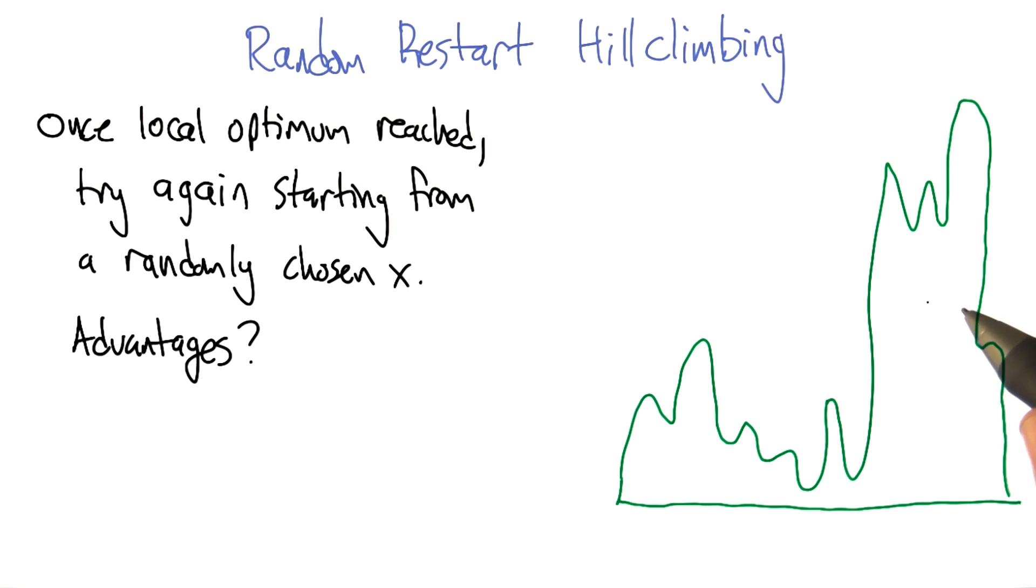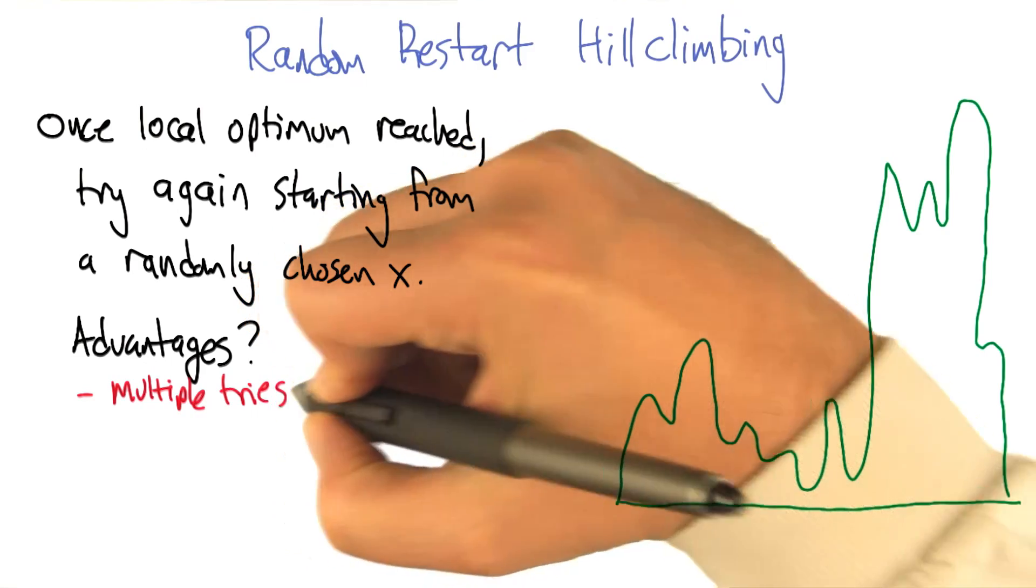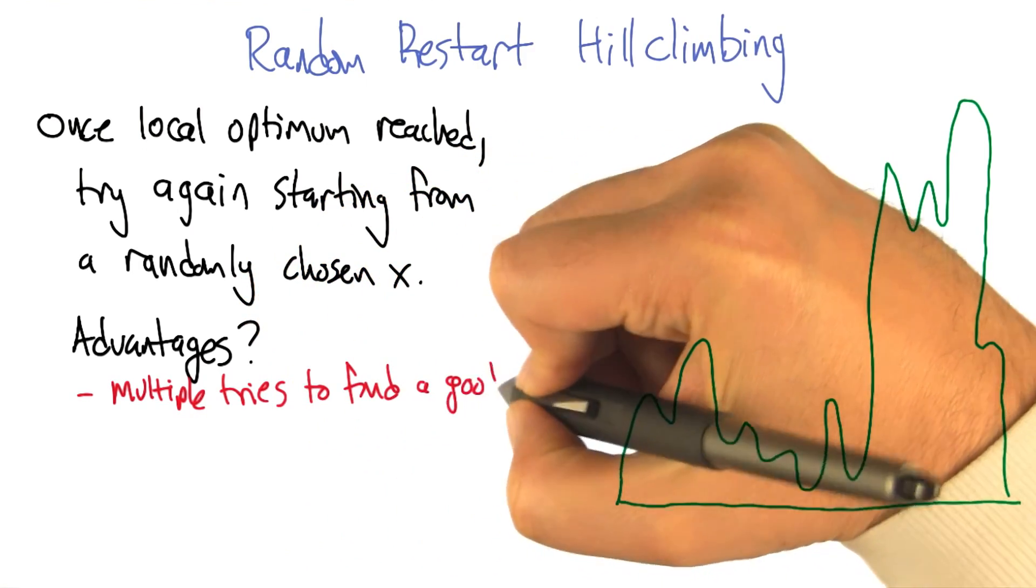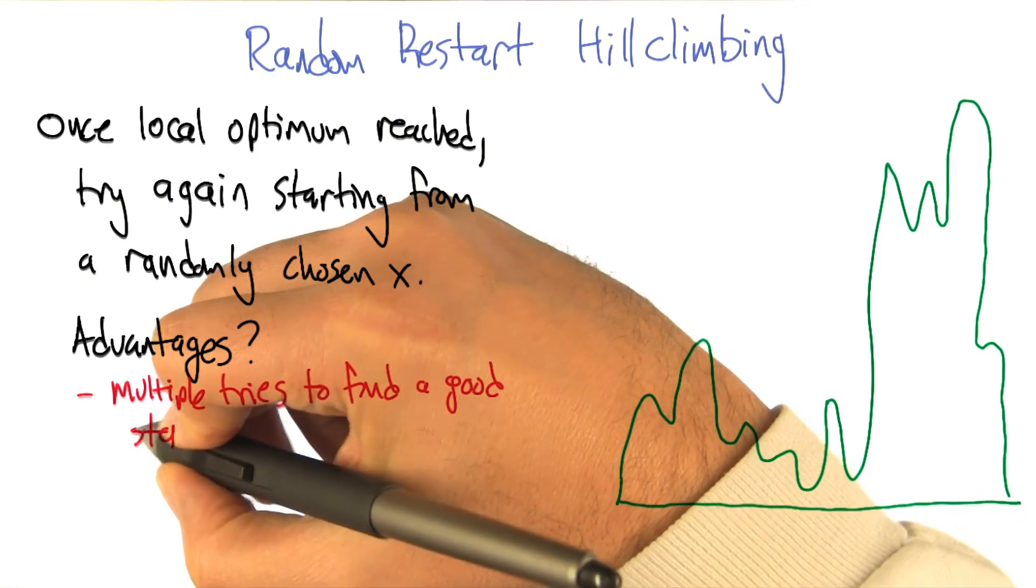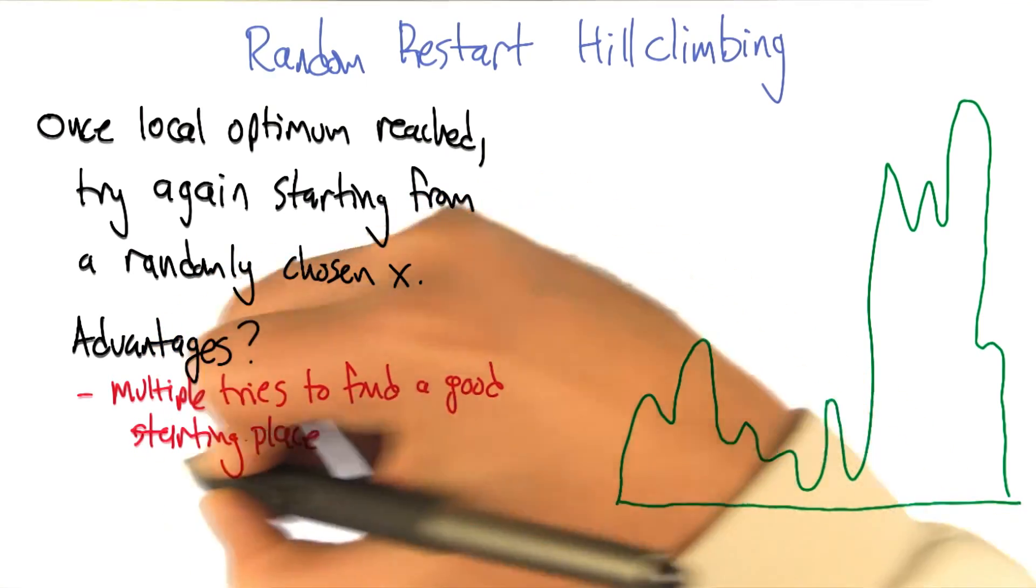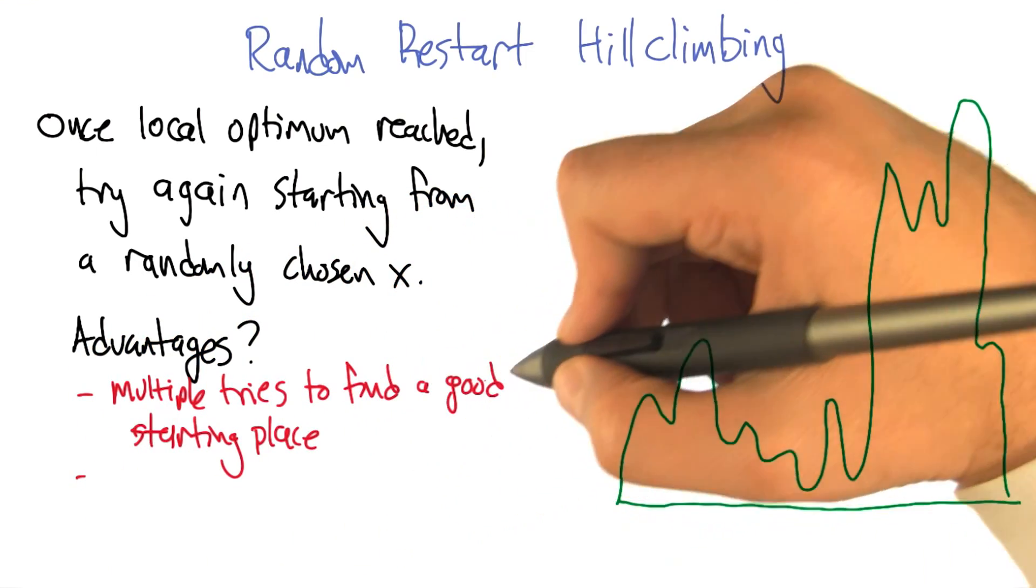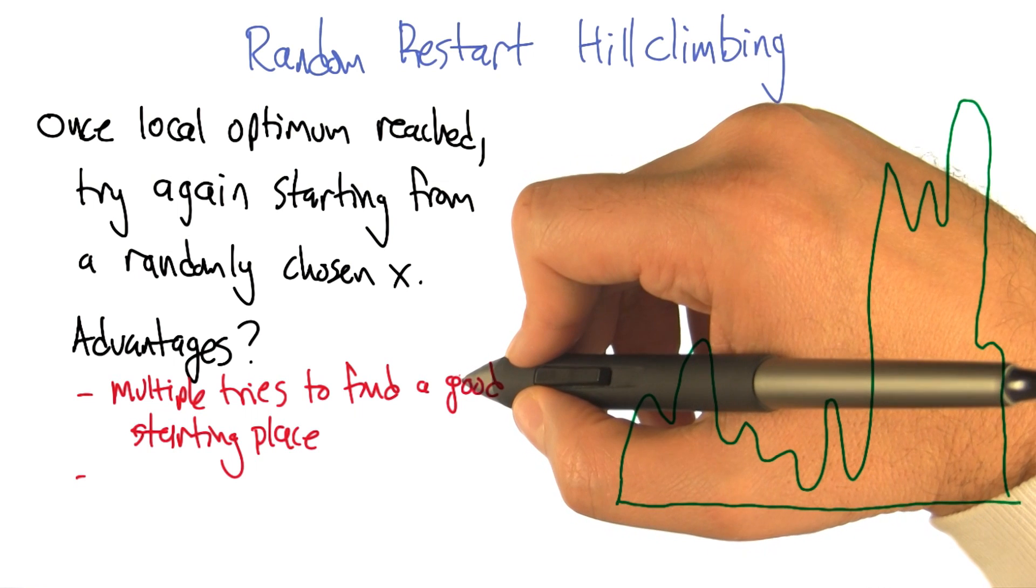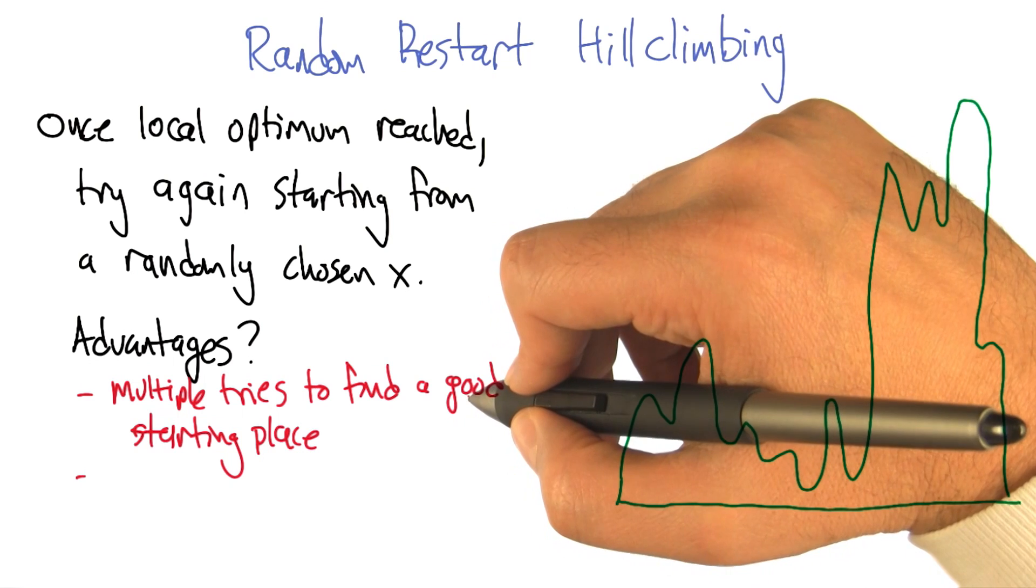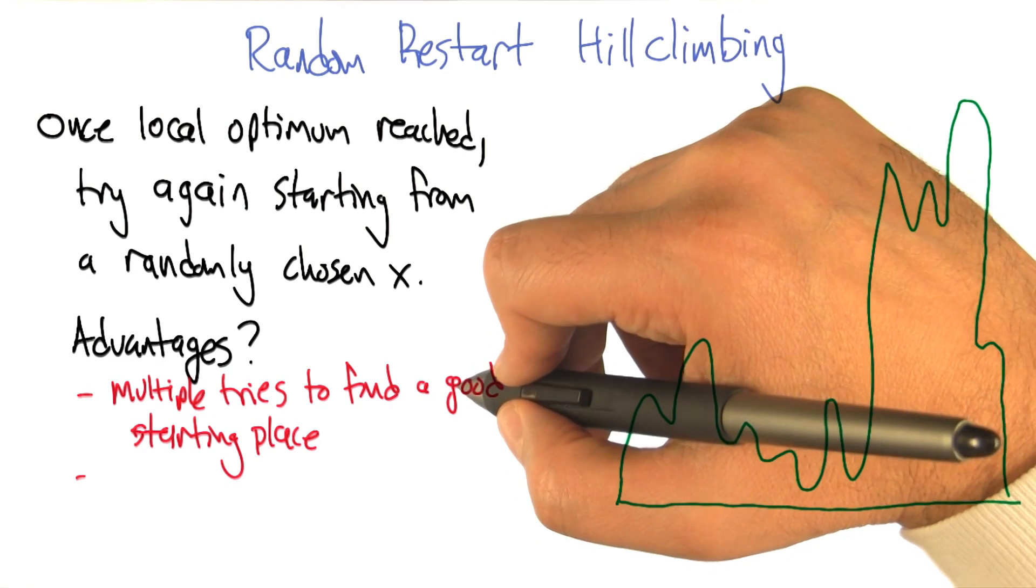So why is this a good idea? Well, it takes away the luck factor of happening to pick a good starting place. Although it replaces it with the luck factor that you randomly happened to pick a good place. But that's okay because you're going to keep randomly picking starting places. You get multiple tries to find a good starting place. There could be various places where you start that don't do so well, but as long as there's places where you do well, you might luck into starting in one of those places and climb up to the tippy top and win.